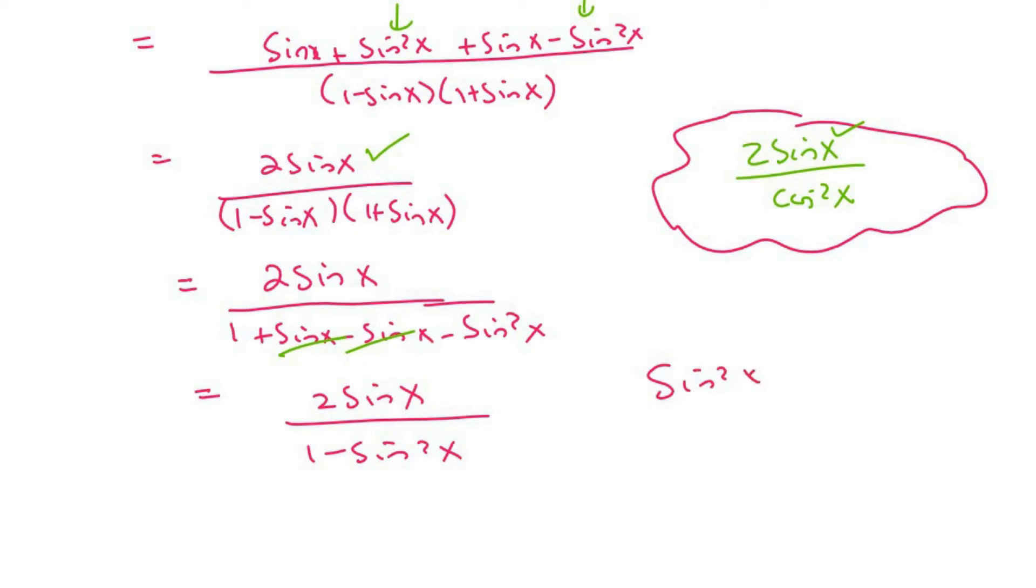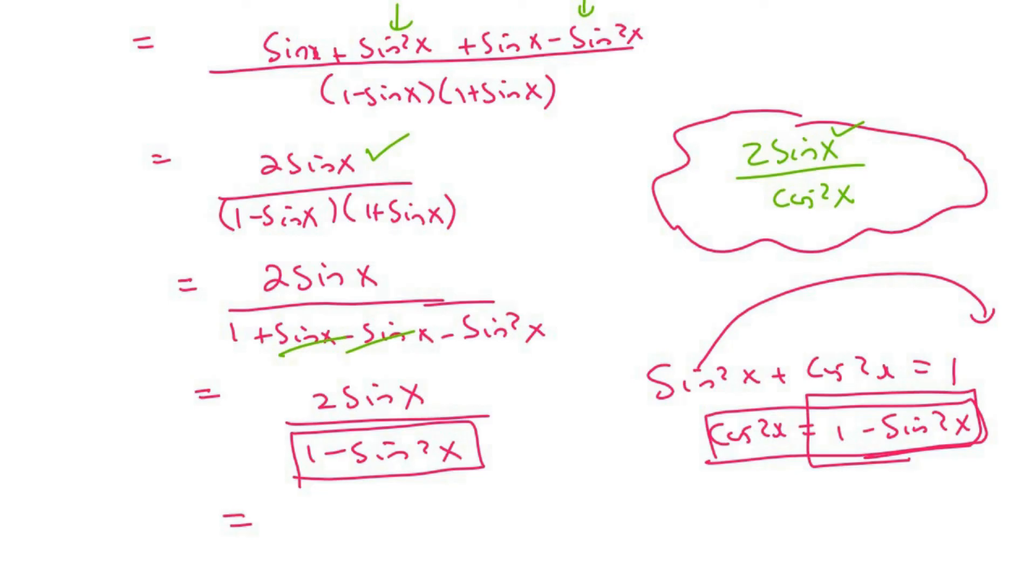Now from grade 11 we know that sine squared x plus cos squared x is equal to 1. So if we're to get the cos squared x by itself, it would be equal to that. See, I took this over. Now look at the bottom here. That's exactly what we have here. So we can replace the bottom with cos squared x. And then therefore left hand side is equal to right hand side.